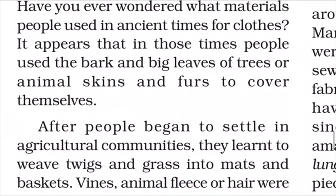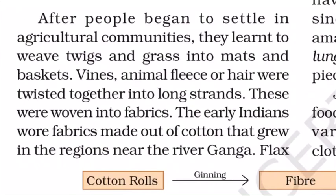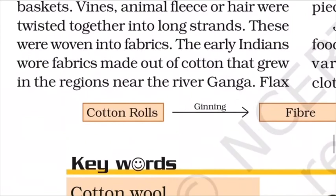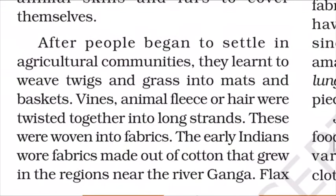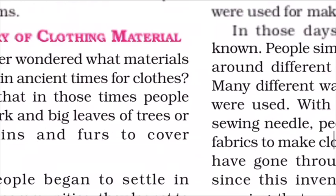Vines are climbing plants with woody stems — like grape vines. These strands made from vines and animal hair were woven into fabrics. The early Indians wore fabrics made out of cotton that grew in the regions near the river Ganga. Flax is also a plant that gives natural fibers, similar to jute. In ancient Egypt, cotton as well as flax were cultivated near the river Nile and were used for making fabrics.